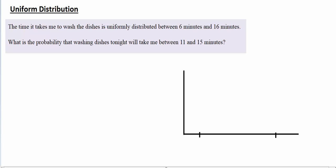Today we're going to discuss the uniform distribution. To start, let's look at an example. The time it takes me to wash the dishes is uniformly distributed between 6 and 16 minutes. What is the probability that washing dishes tonight will take me between 11 and 15 minutes?